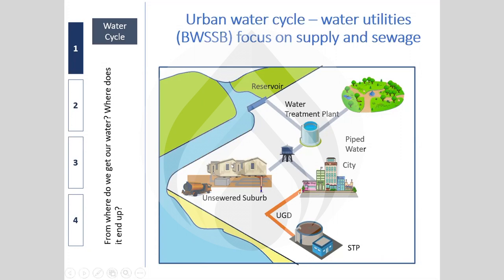Cities across India are growing much faster than pipe supply and sewerage networks are being built. As a result, in suburbs and peri-urban areas where urbanization has happened but networks haven't yet reached, people rely on wells or, if groundwater is in bad condition, on tankers. Wastewater may be let into drains, polluting local water bodies, or going into soak pits and soaking into groundwater.